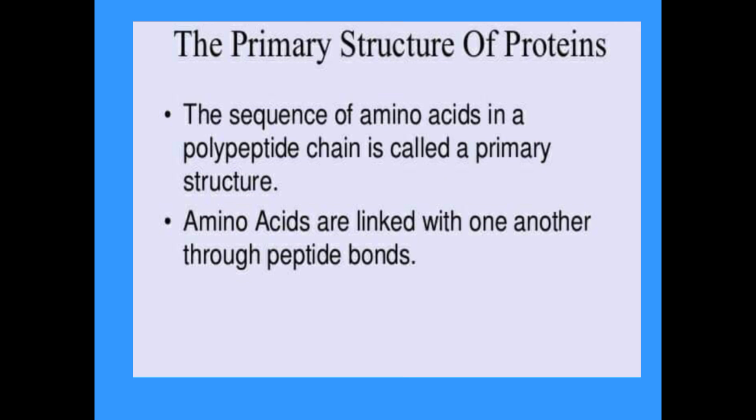Regarding the primary structure of proteins: each protein has specific properties determined by the number and specific sequence of amino acids in the molecule, and by the shape the molecule assumes as the chain folds into its final compact form. There are four levels of organization: primary, secondary, tertiary, and quaternary structure. The sequence of amino acids in a polypeptide chain is called the primary structure; amino acids are linked through peptide bonds.